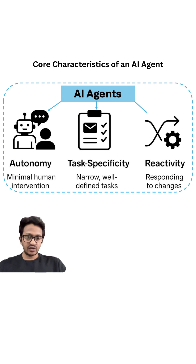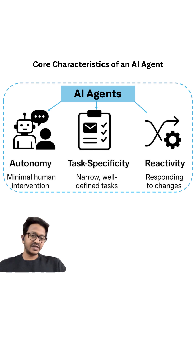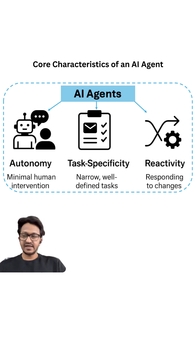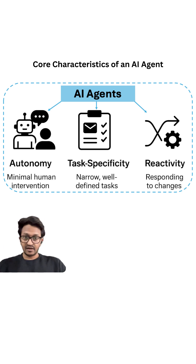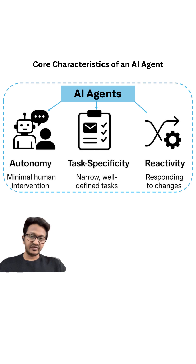Then comes reactivity — it's all about responding to changes. When it comes to AI agents, we are talking about dynamic scenarios; nothing is fixed. If the AI agent thinks the response it has generated is not up to the mark, it can reiterate and try to produce another response, doing so until the response is satisfactory. That is reactivity as one of the core characteristics of an AI agent. So these are the three core characteristics of an AI agent.